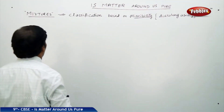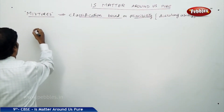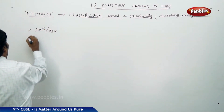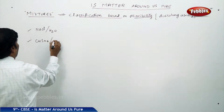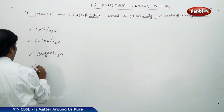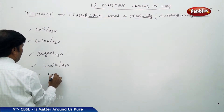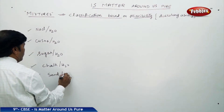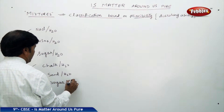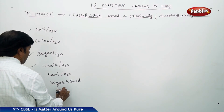Before going to the classification of mixtures based on miscibility, I will give you some examples. You can take sodium chloride dissolved in water, copper sulphate dissolved in water, sugar dissolved in water, chalk in water, sand in water, sugar and sand mixtures, then ink in water.